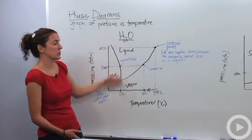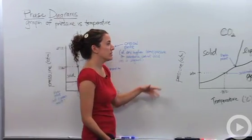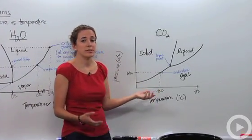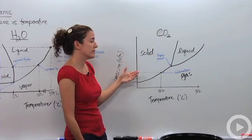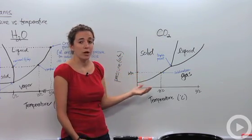Alright, so let's look at something else. This was water. So let's look at something else. There's another phase diagram we can talk about. Each substance has its own phase diagram. This is carbon dioxide. And there's a couple of differences in carbon dioxide than there was in water.